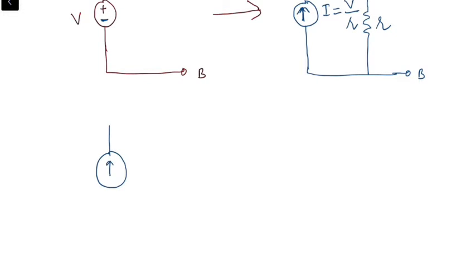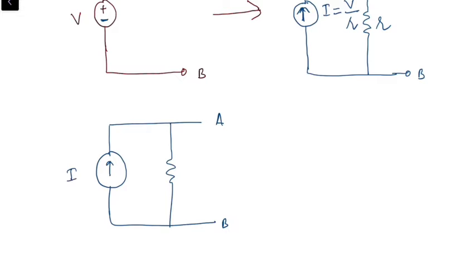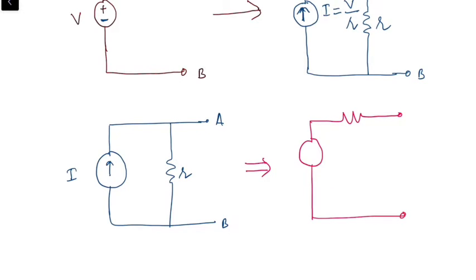We can also convert a practical current source into a practical voltage source. A practical current source consists of an ideal current source in parallel with the resistance. It can be changed to a practical voltage source by connecting the internal resistance in series with the voltage source. The arrow head will be replaced by the positive terminal and the arrow tail will be replaced by the negative terminal. The voltage supplied by this source will be equal to the current multiplied by its internal resistance.